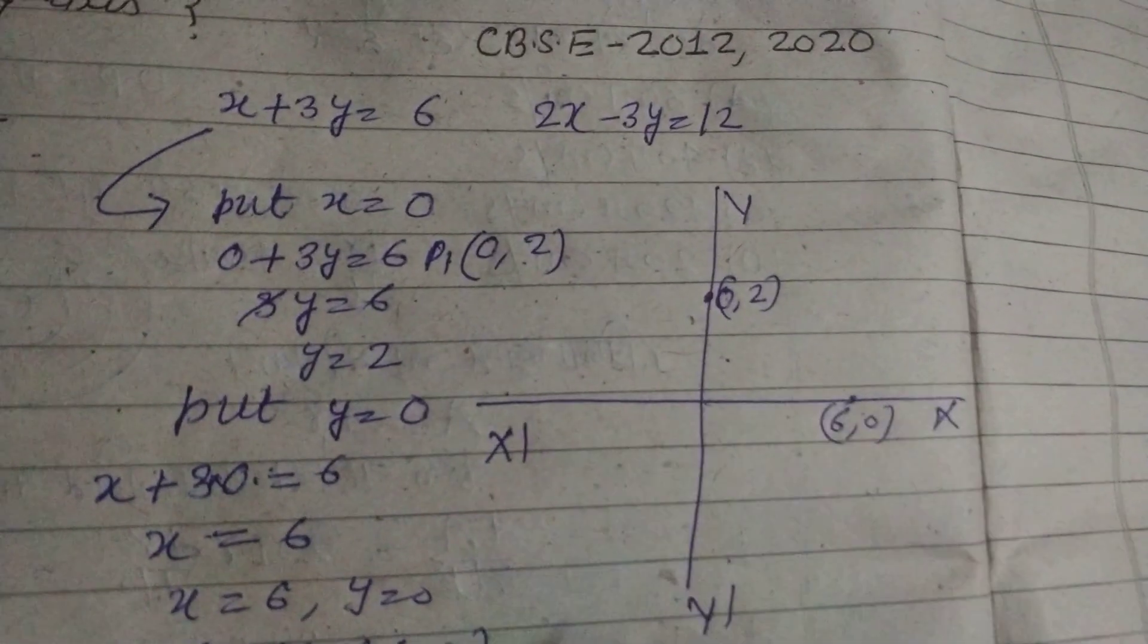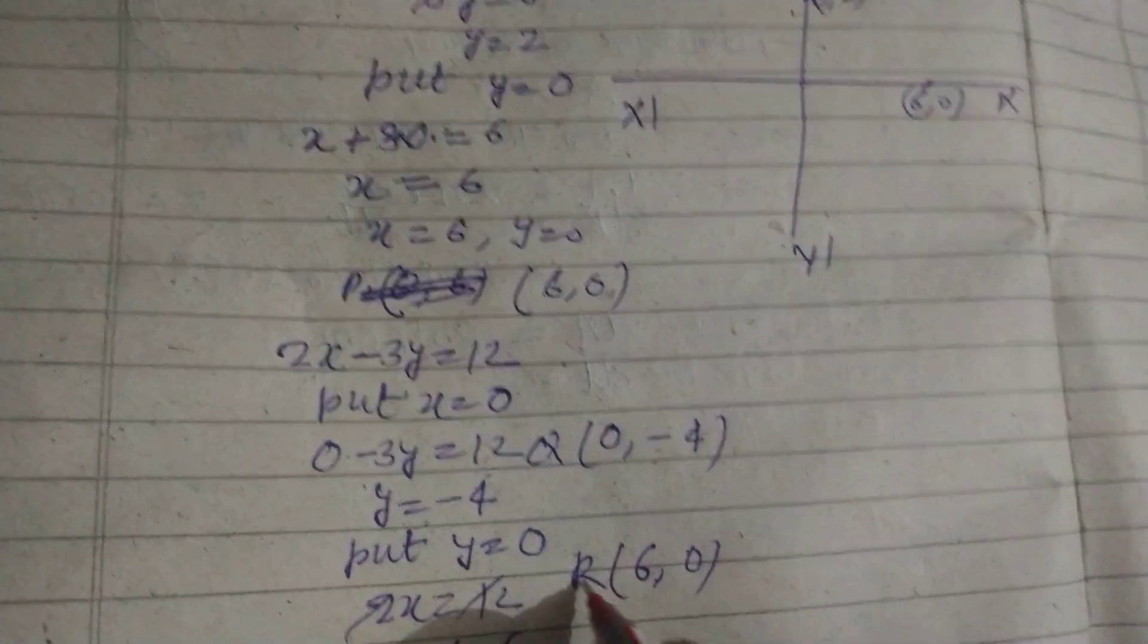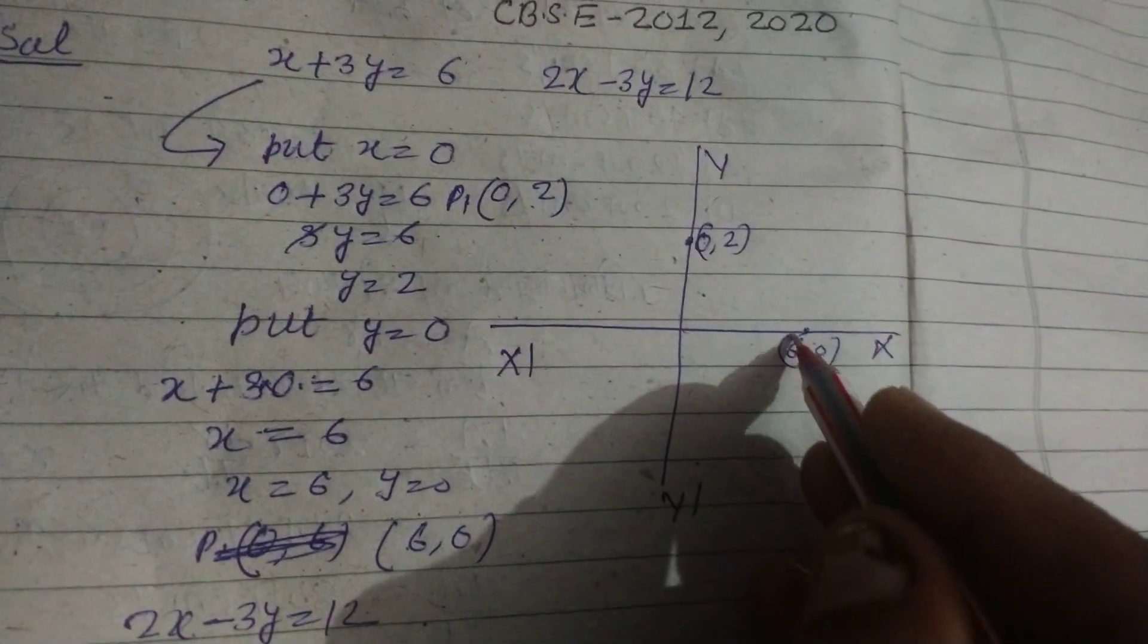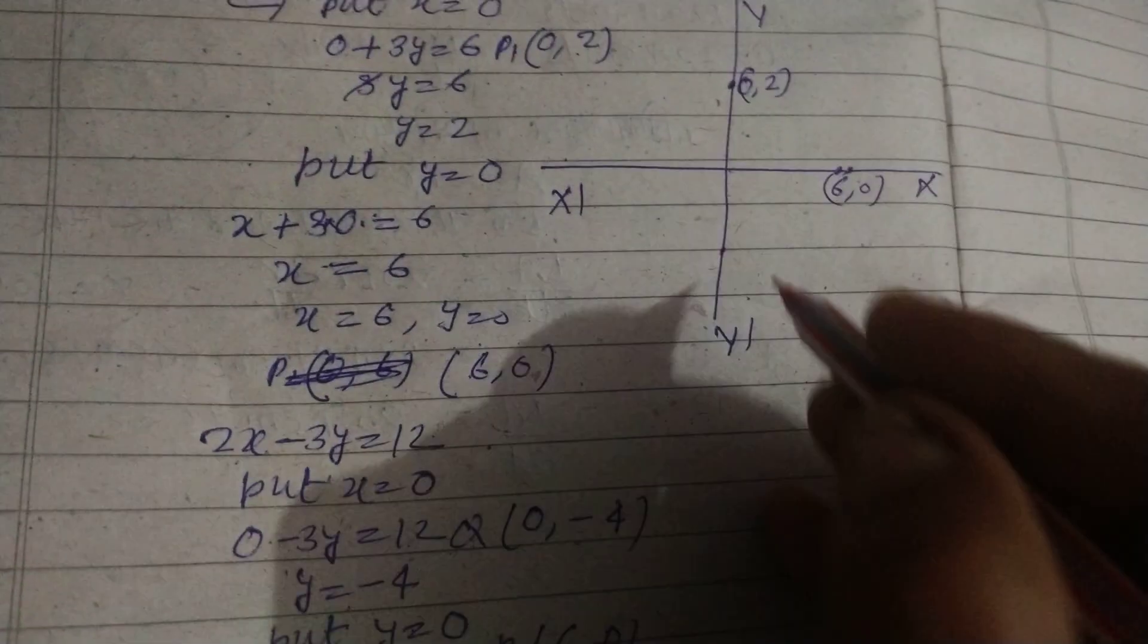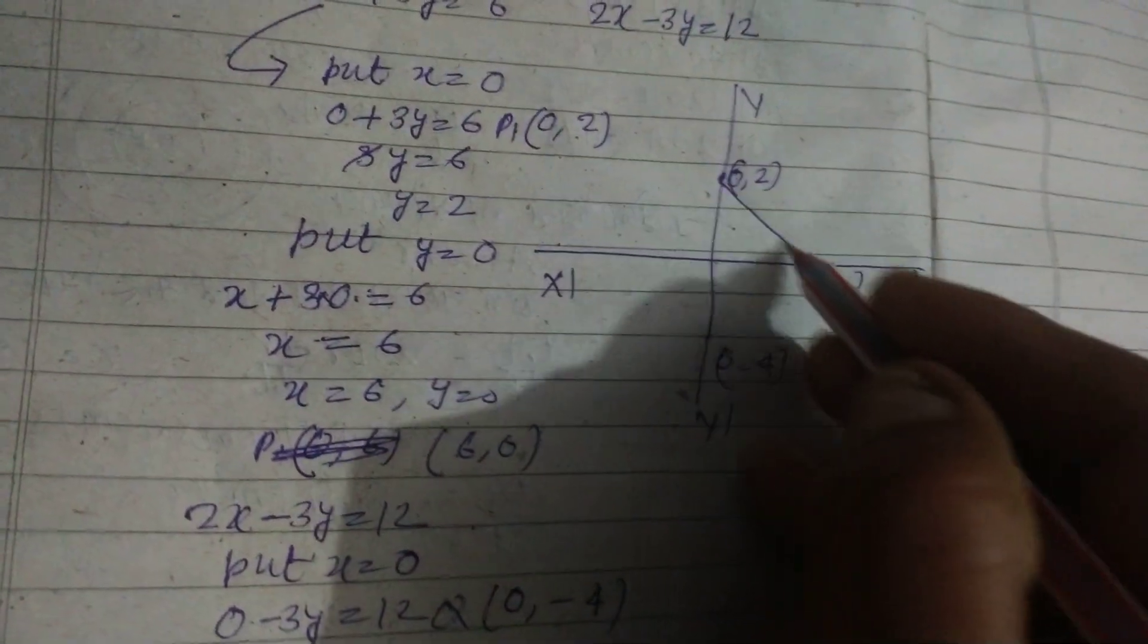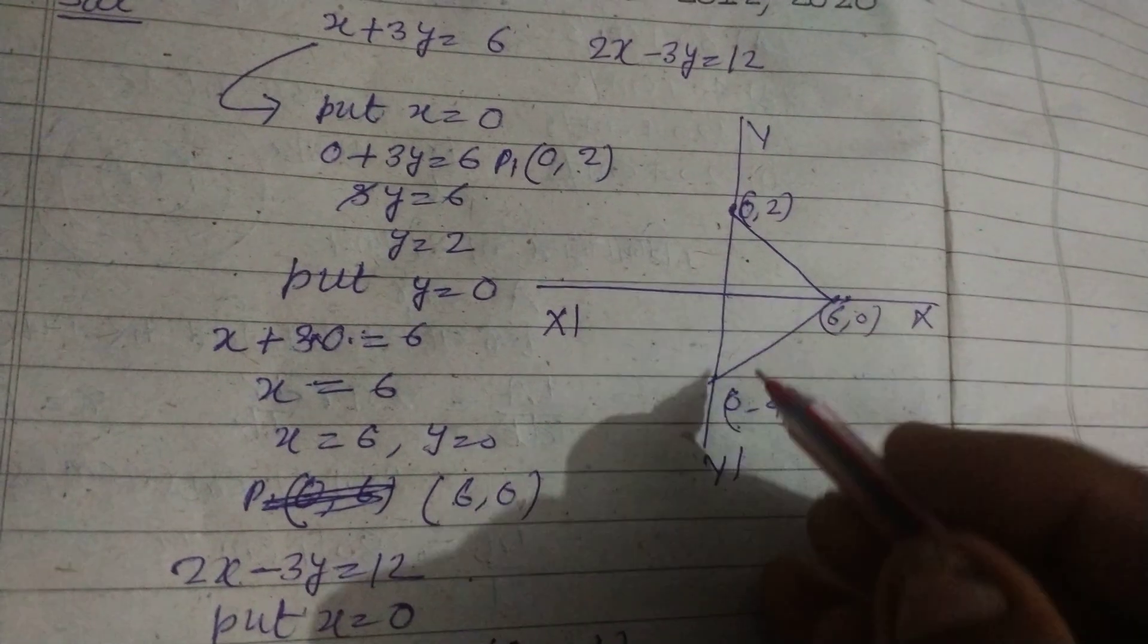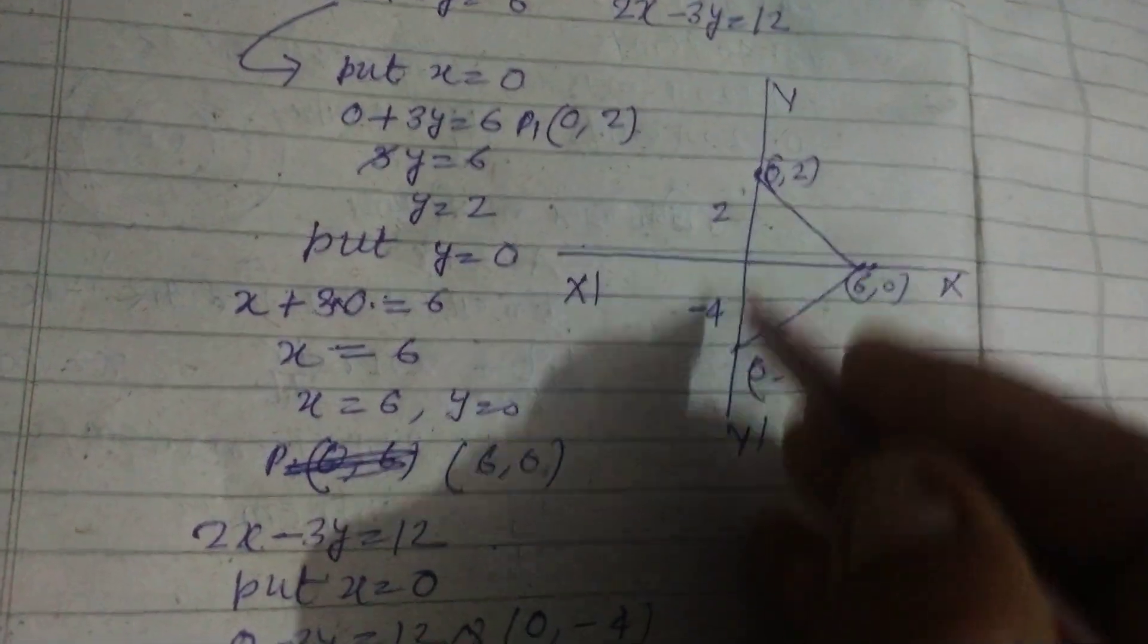So 6 comma 0 is common point. This is q and this is r. So we take same point q, r and 6 comma 0 is common so this is the solution. Another point is 0 comma minus 4. So we join this and this is y-axis. This is minus 4 and this is 2, so this is 6.